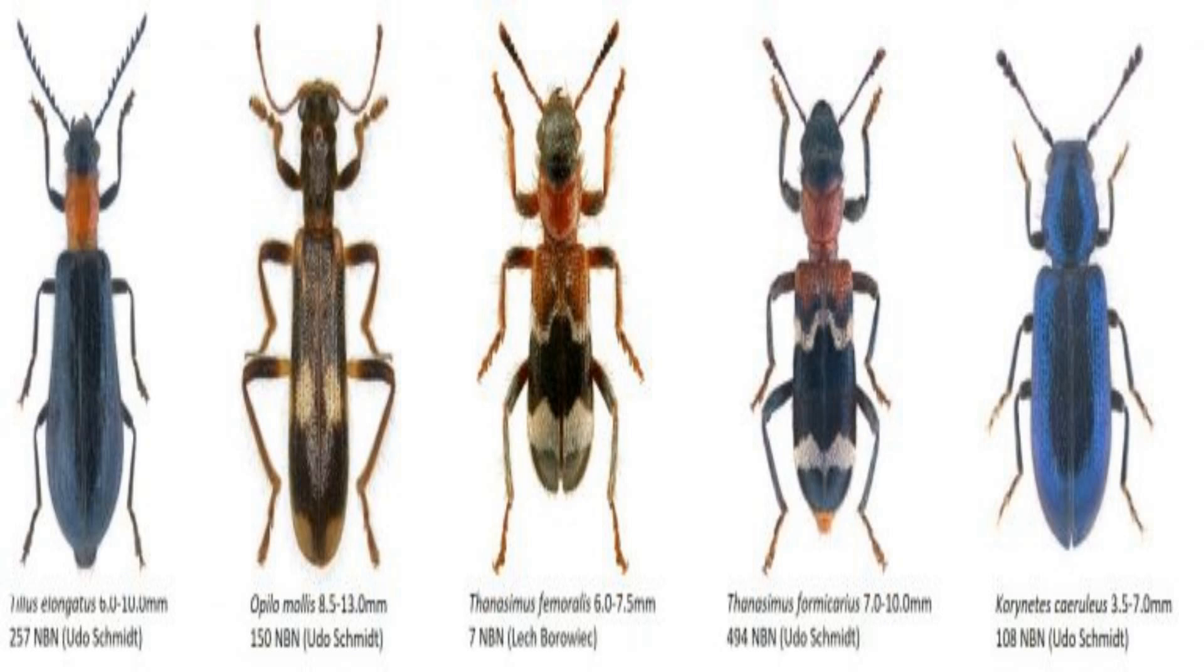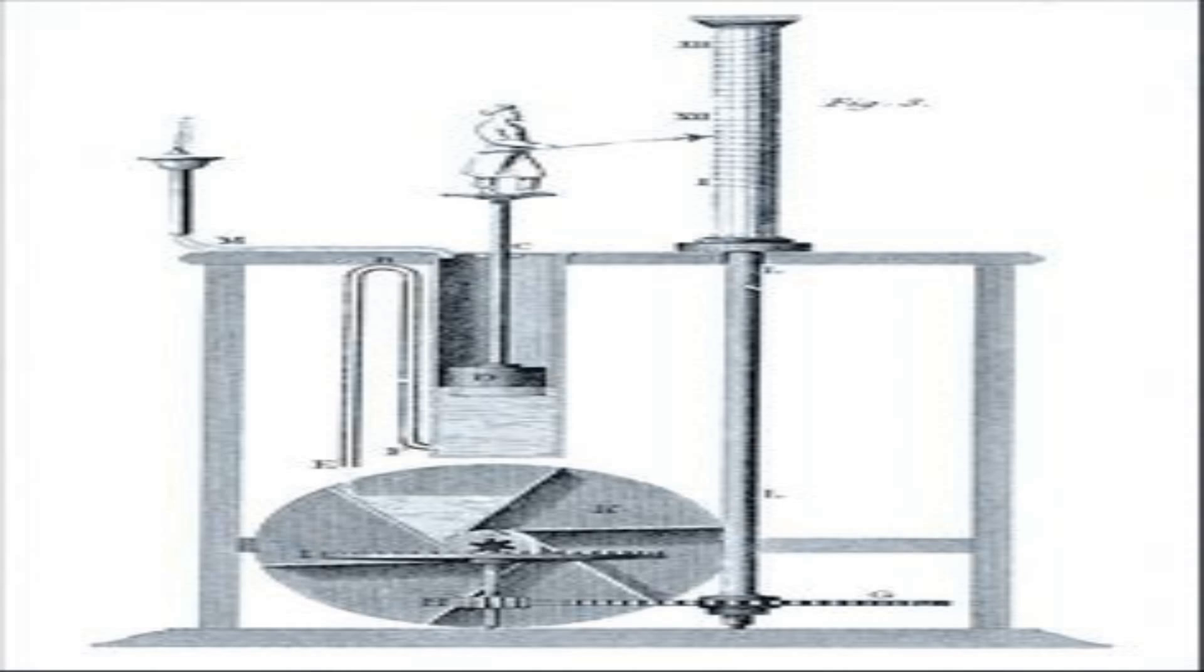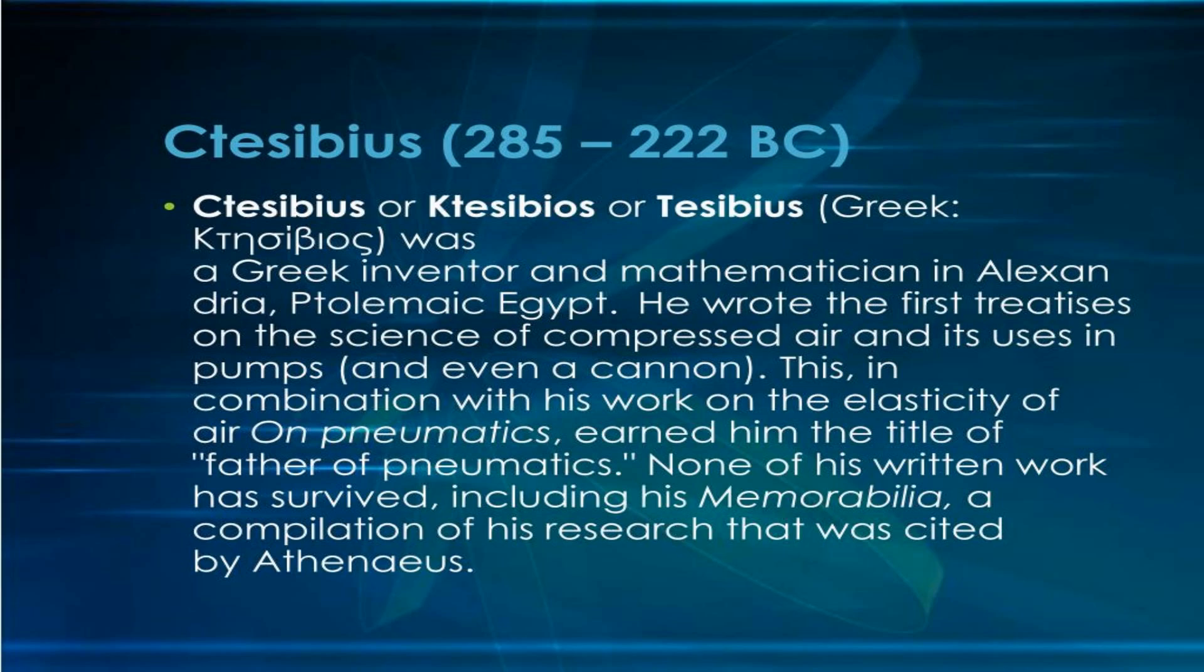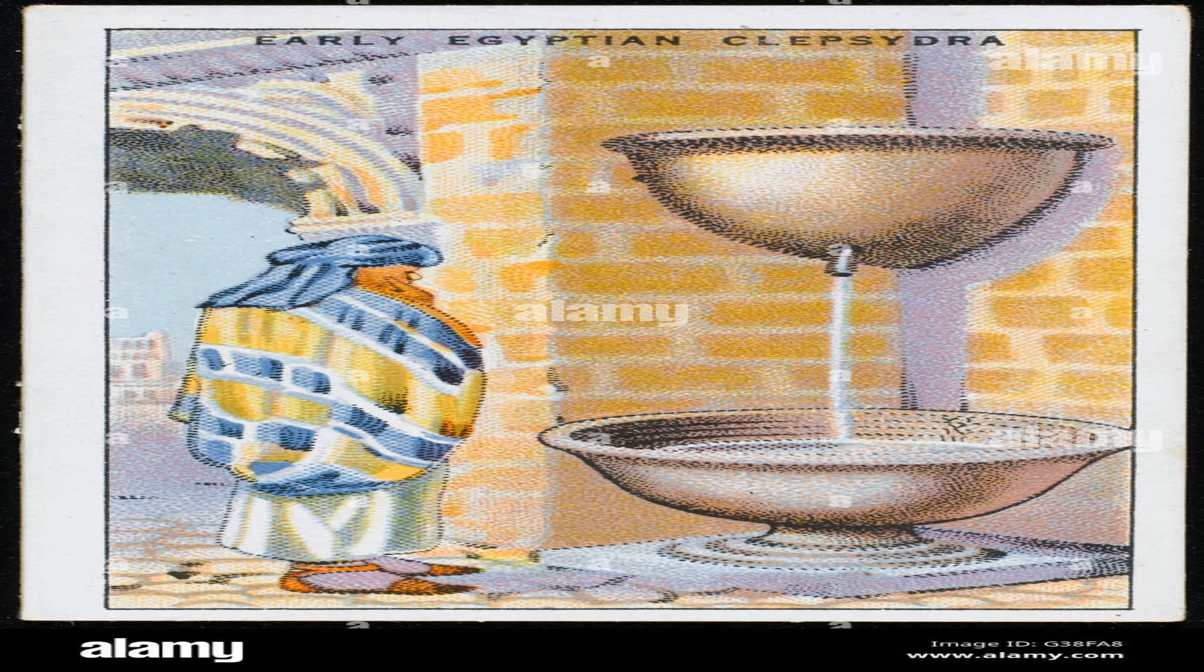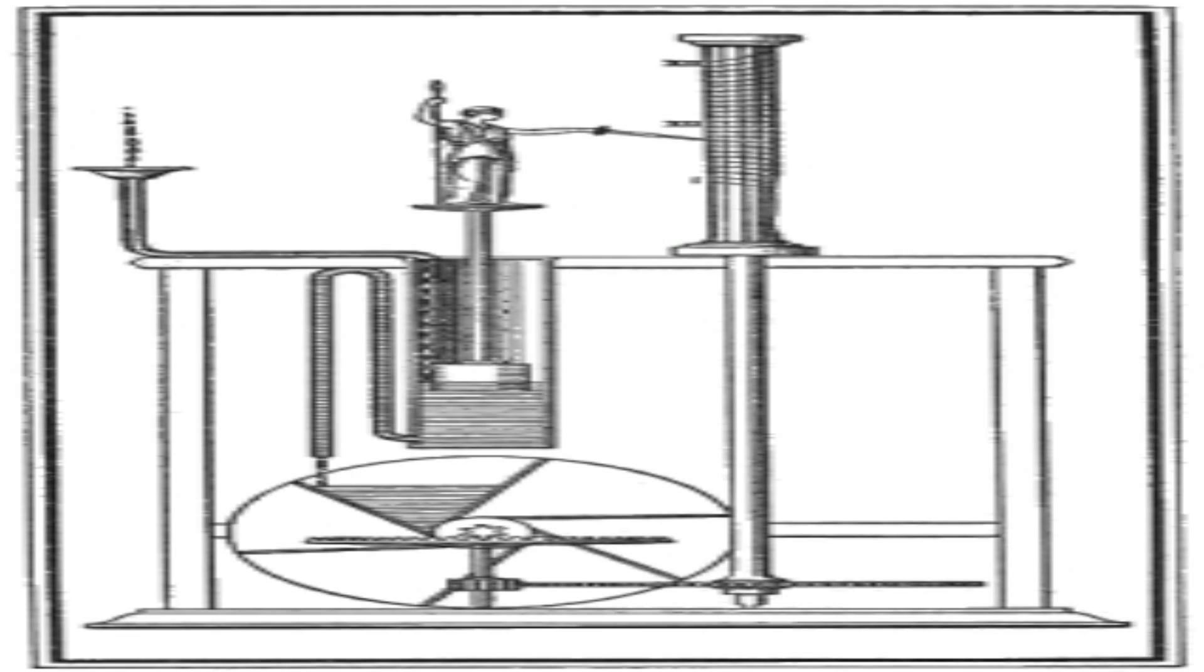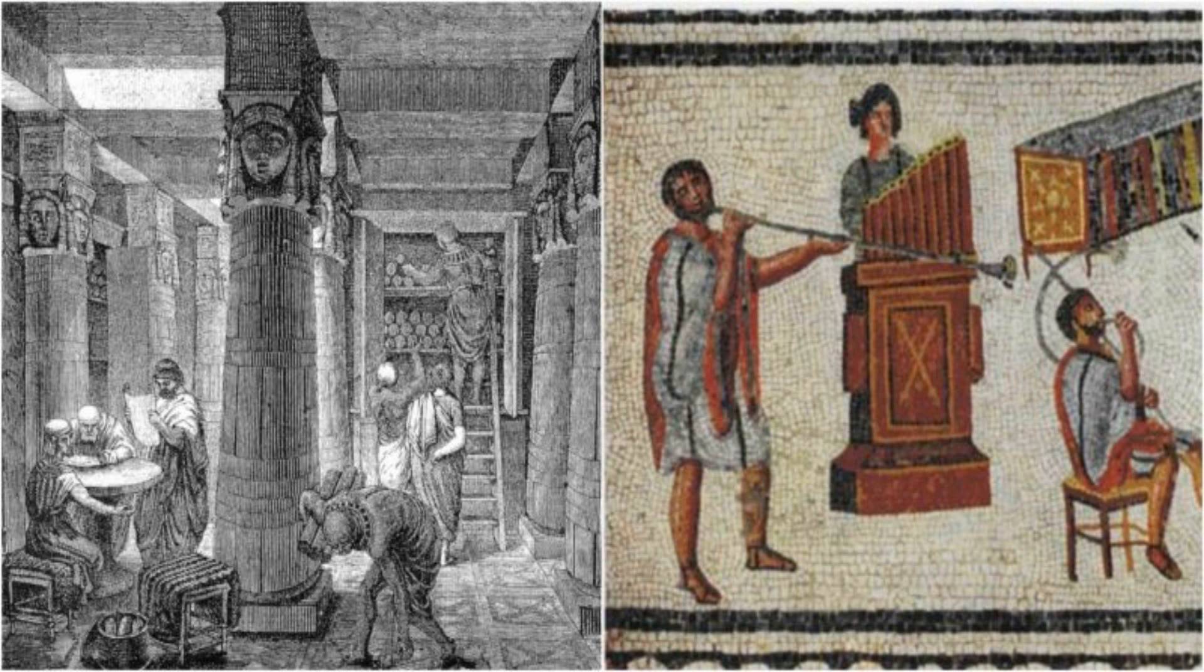Conclusion. The flow-type klepsidra by Ctesibius of Alexandria was a remarkable invention that revolutionized the measurement of time in ancient times. It was based on the principles of pneumatics and hydraulics, and it used a clever system of air pressure and water flow to achieve constant and accurate timekeeping. It was widely used for various purposes in different fields of activity, such as astronomy, religion, military, law, and water management. It was also a source of inspiration and innovation for later inventors and engineers who improved its design and functionality.